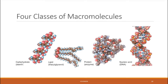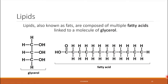Next on our list is lipids. Every type of macromolecule is made of a different building block — carbohydrates were composed of monosaccharides. Lipids are composed of multiple chains called fatty acids linked to a molecule of glycerol. On the left is what a glycerol molecule looks like, and on the right is a long fatty acid chain — essentially a chain of carbons with hydrogen sticking off of it. This particular fatty acid has 11 carbons and is called lauric acid, the fatty acid commonly found in coconut oil.